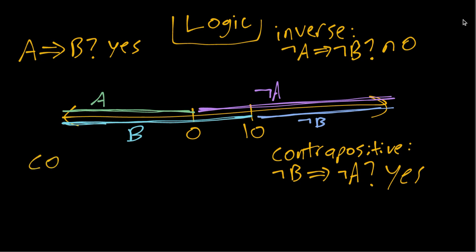Finally we can look at the converse, which is B implies A. In this example, that would say if we know that x is less than or equal to 10, does that imply that x is less than or equal to 0? Again, that is clearly false in this case because there are points like x equals 5 where B is true—x is less than 10—but A is not true because x is not less than 0. So the converse is not a valid statement.